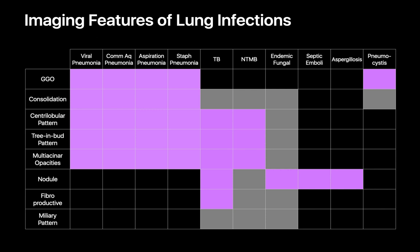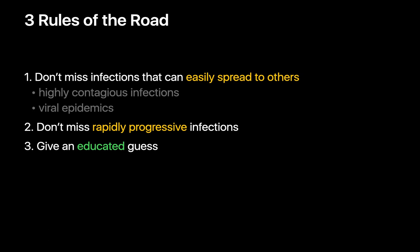The rules of the road for radiologists when diagnosing lung infections: first, be safe — don't miss highly contagious infections that can pose a substantial public health problem, like tuberculosis. Be safe — don't miss rapidly progressive infections that can quickly kill a patient, like septic emboli or invasive aspergillosis. After you've got that covered, just do your best to provide folks with an educated guess about what's going on to the best of your ability.